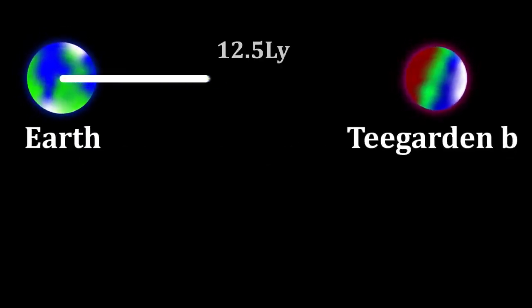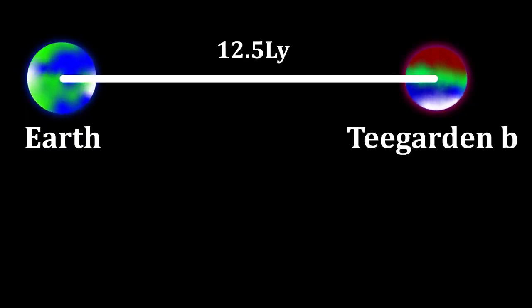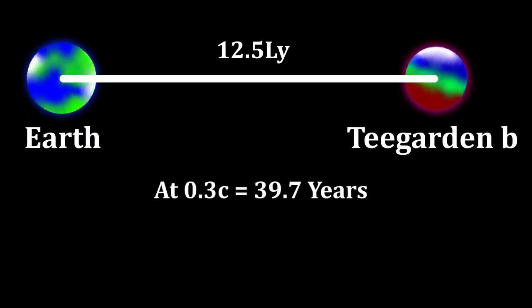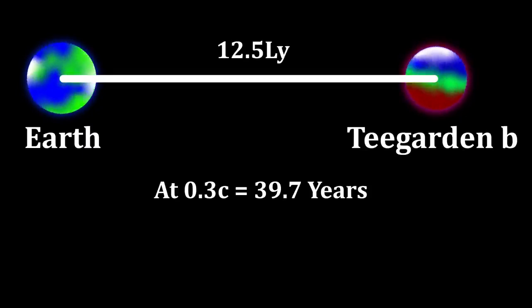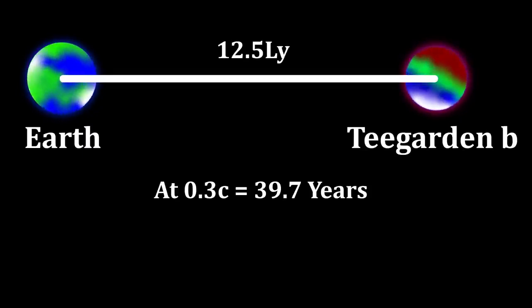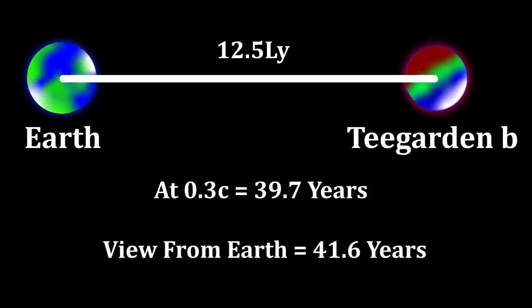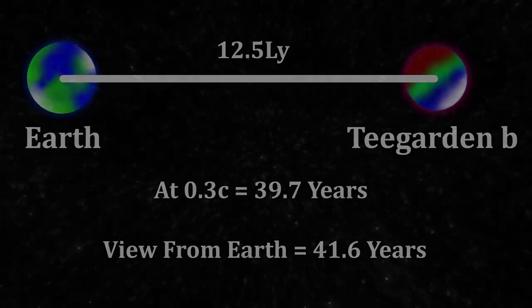If you answered A) time dilation, then you were close but not correct. Teagarden b is 12 and a half light years away. Traveling at 30% the speed of light would take you 39.7 years to reach the planet. However, for the people watching back on Earth, it looks like it took you 41.6 years to get there. Time has effectively slowed down for you by almost two years over the whole journey. This is explained by Einstein's theory of general relativity. In essence, the faster you go, the slower time goes.